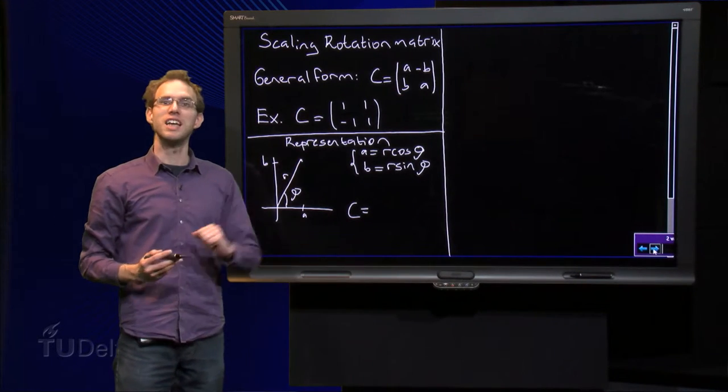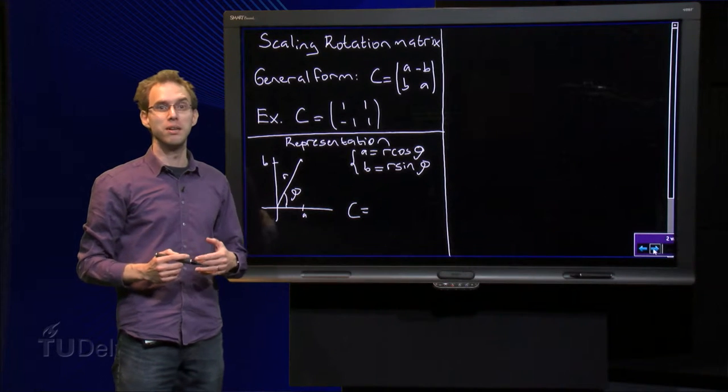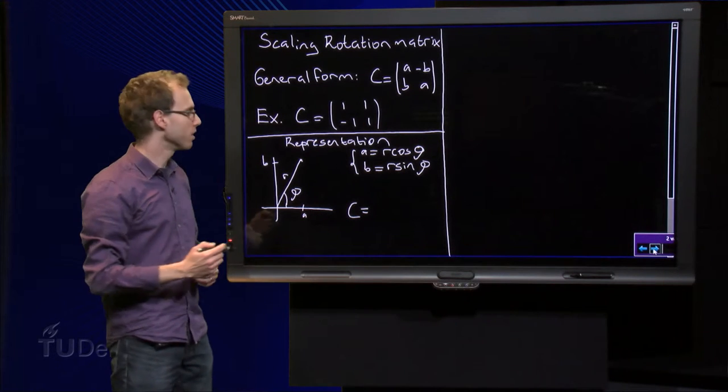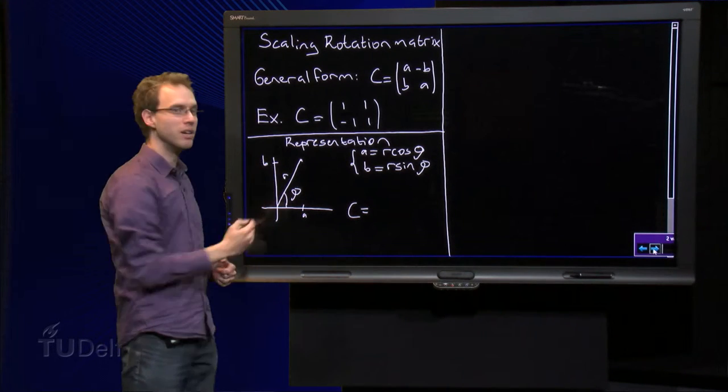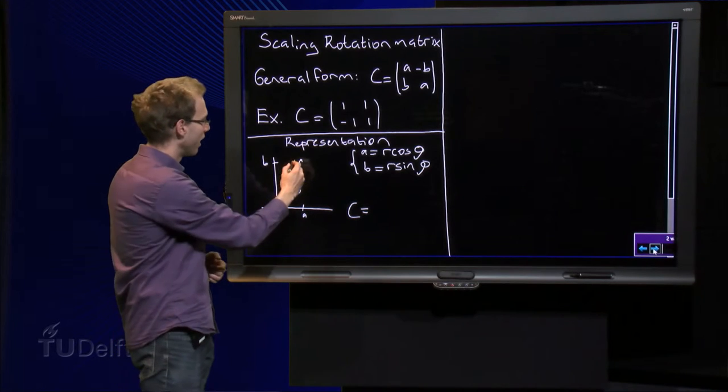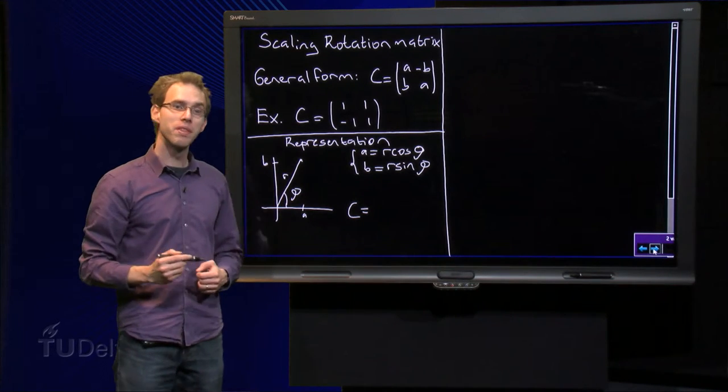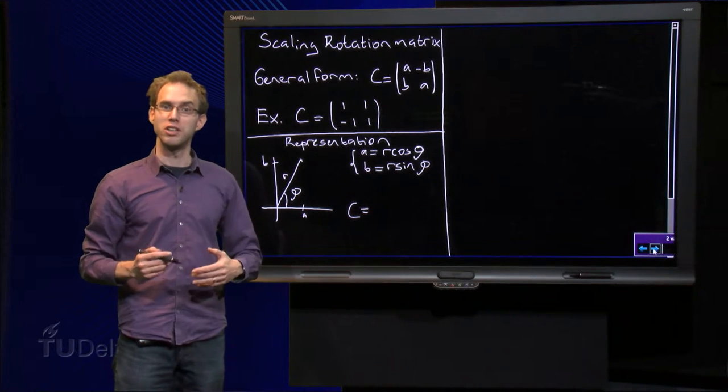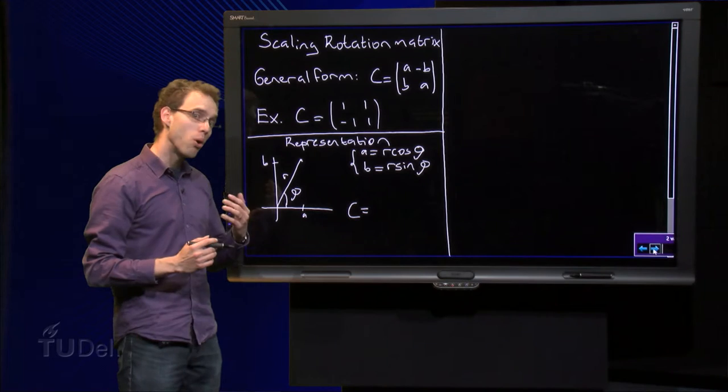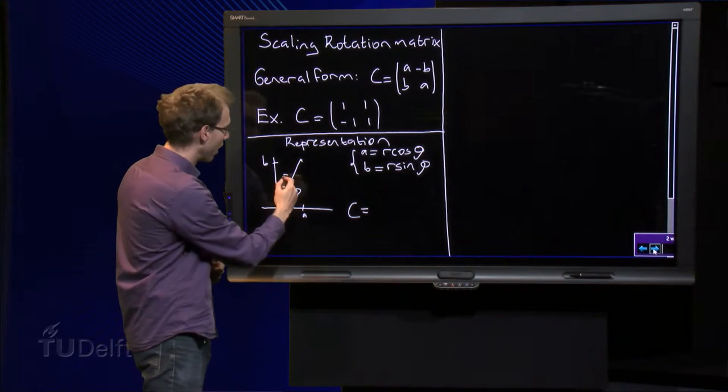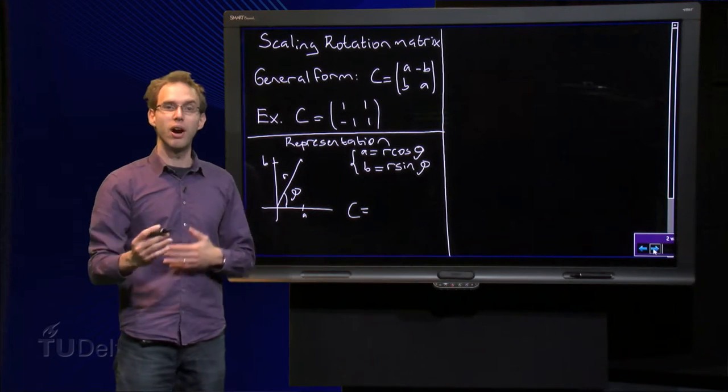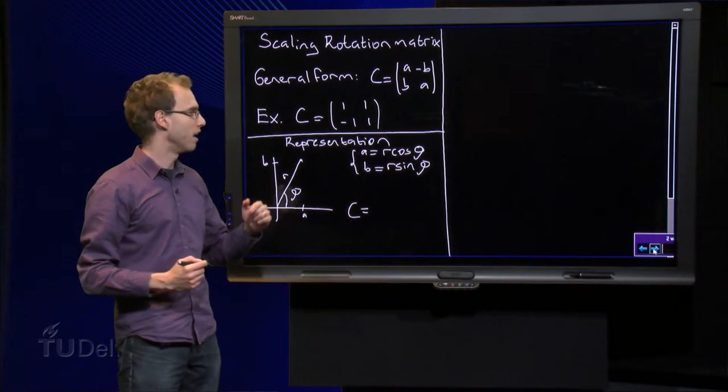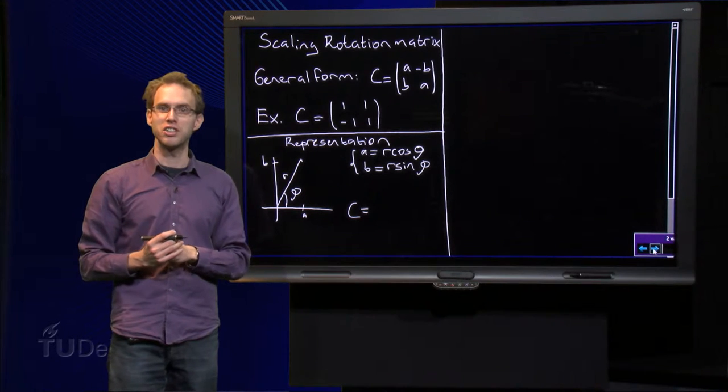We can represent this matrix also as a point in the plane, because the matrix is defined by A and B, by two numbers. I can put A on the x-axis and B on the y-axis, and then I have a point (A,B) in the plane. And I can give this point AB its Cartesian coordinates A and B, but I can also give the polar coordinates R and phi. And we know how to convert Cartesian into polar coordinates: A equals R cosine phi and B equals R sine phi.